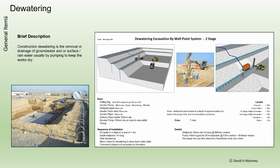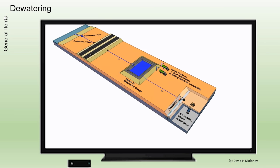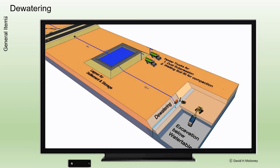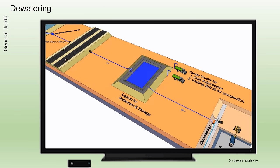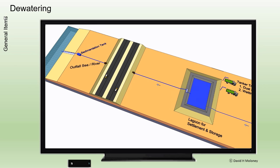Dewatering. Construction dewatering is the removal or drainage of groundwater and/or surface/rain water, usually by pumping, to keep the works dry.